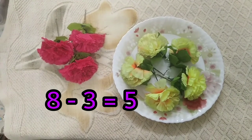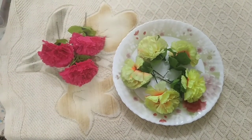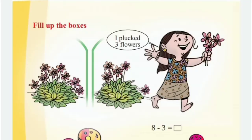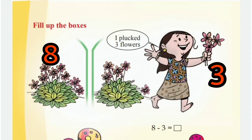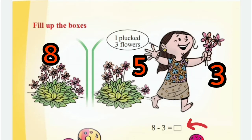Am I right? Okay, then all of you come back to our page. There were 8 flowers. Lada plucked 3 flowers from the plant, so now it has only 5 flowers. Then you have to fill this box: 8 minus 3 is equal to how many? Yes, 8 minus 3 is equal to 5.